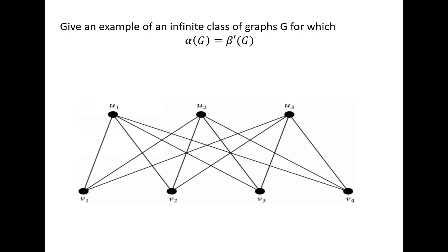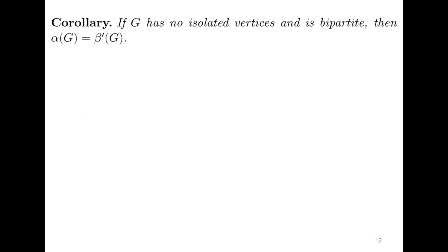For the complete bipartite graph, the independence number — for example, these four vertices are independent of each other — equals maximum of m and n, which is β'(G), so four equals four. Also, if G has no isolated vertices and is bipartite, prove that α(G) = β'(G).